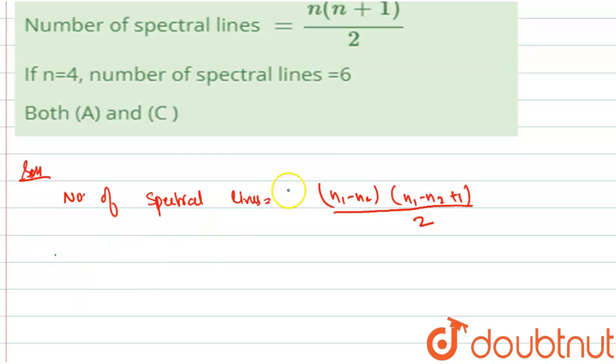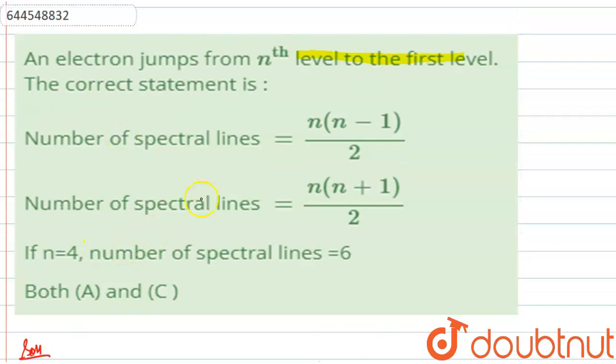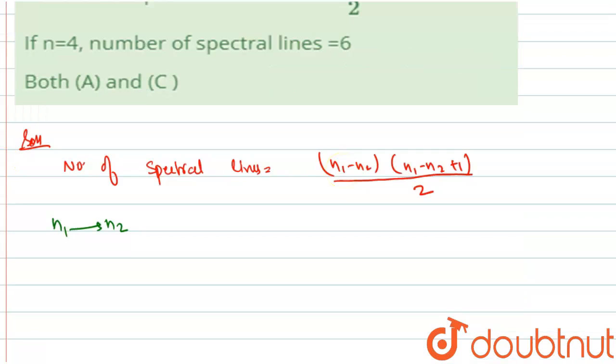We are assuming that transition is happening from n1 to n2. In this case, the transition is from nth level to the first level. Therefore, n2 equals 1 and n1 equals n.